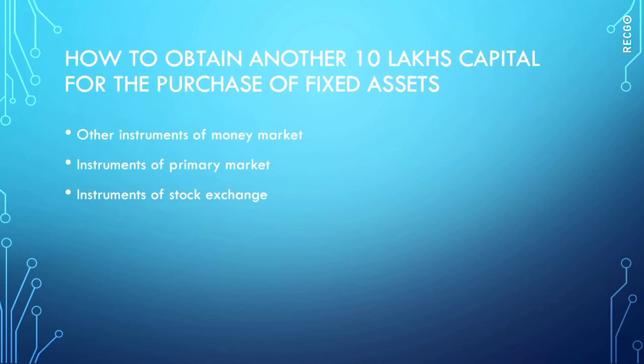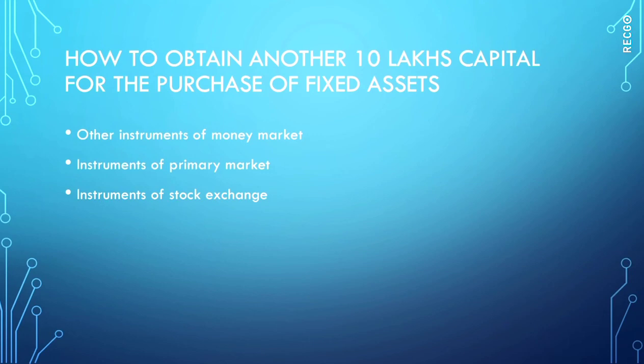The next question is how to obtain another 10 lakhs capital for the purchase of fixed assets. To raise this additional 10 lakhs of fixed capital, one option is other instruments of the money market, or the company can go for instruments of the primary market, as well as instruments of the secondary market. You have to explain what other instruments of the money market, instruments of the primary market, and instruments of the stock exchange are available.